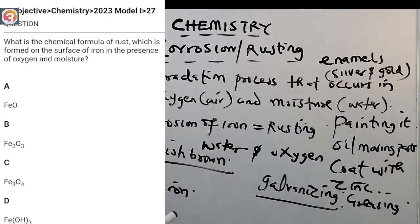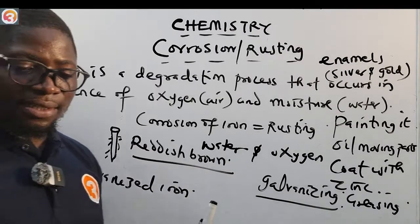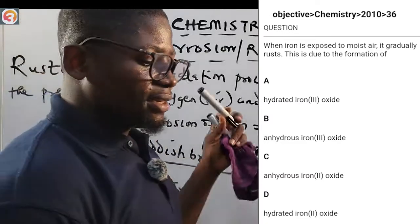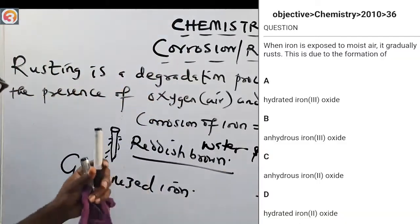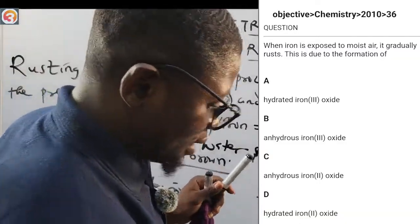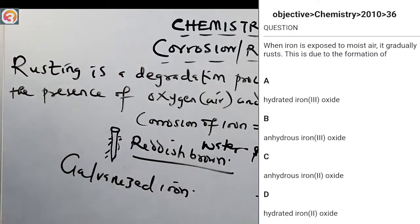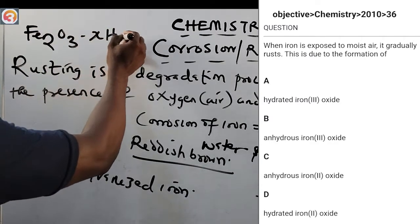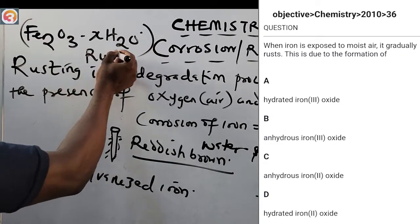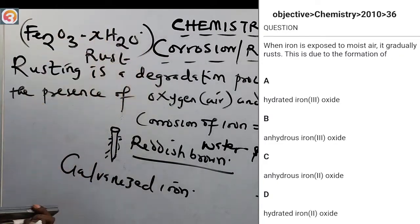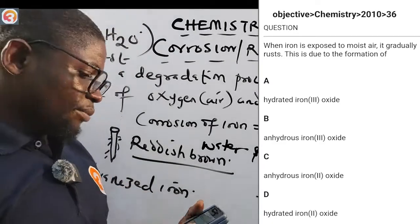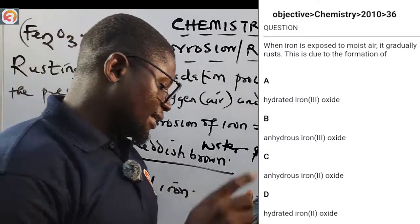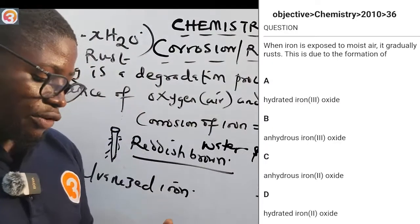Now a 2010 question, number 36: when iron is exposed to moist air, it gradually rusts. This is due to the formation of what? Option A says hydrated iron(III) oxide, and that is correct. The formula for rust is Fe2O3·xH2O — hydrated because of the dot here. So the correct answer is option A, hydrated iron(III) oxide.